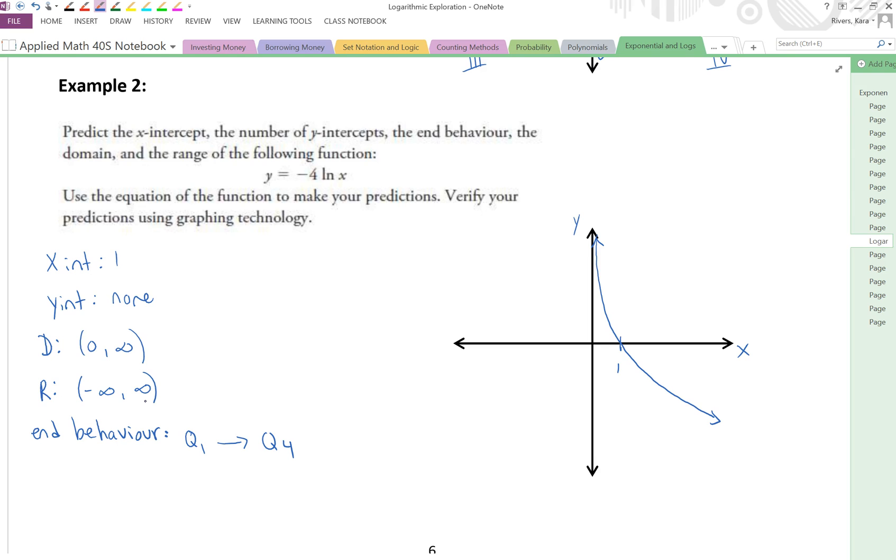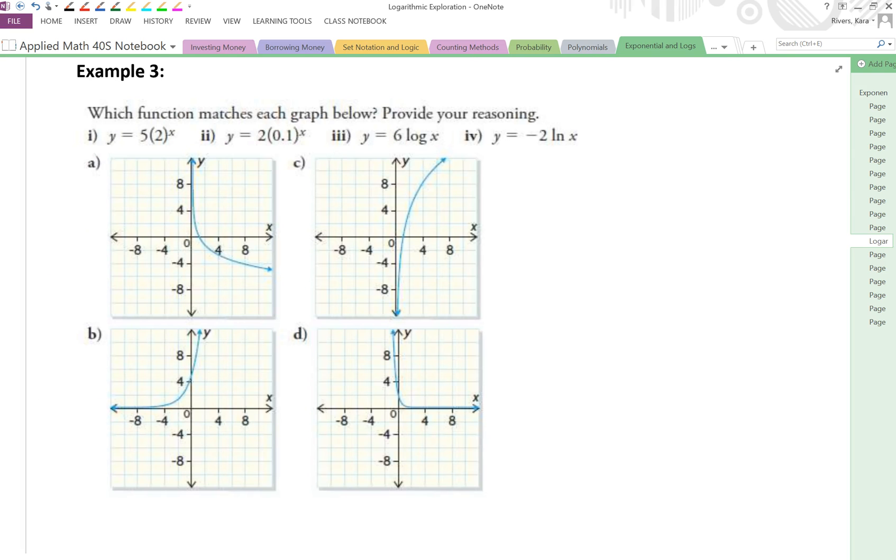Let's take a look at example 3. Which function matches each graph below? Provide your reasoning. So we can see increasing functions, we can see decreasing functions, we can see functions that cross the x-axis, and we see functions that cross the y-axis. So not only are we distinguishing between increasing and decreasing logarithmic functions, but we also have to see which ones are logarithmic, or which ones are exponential.